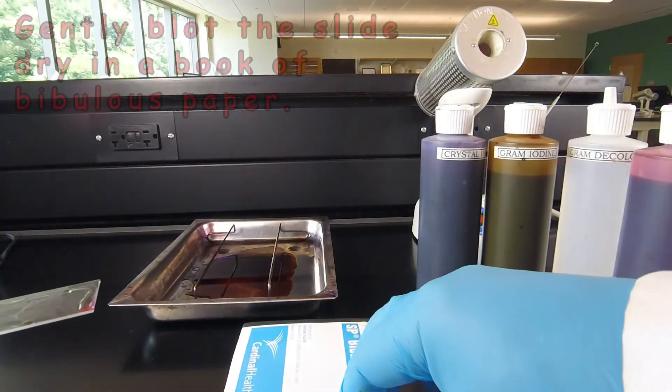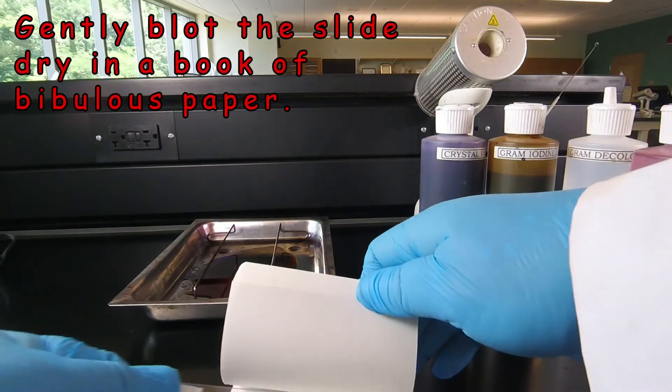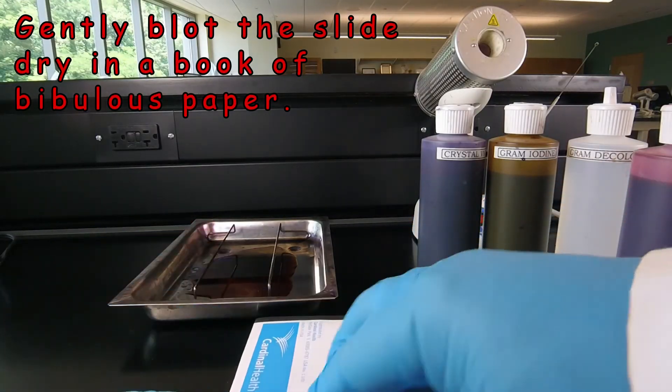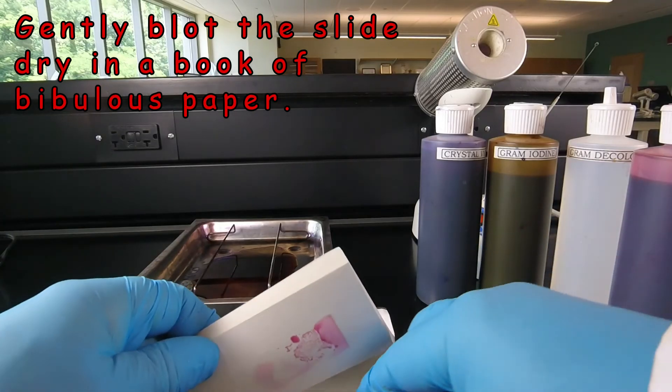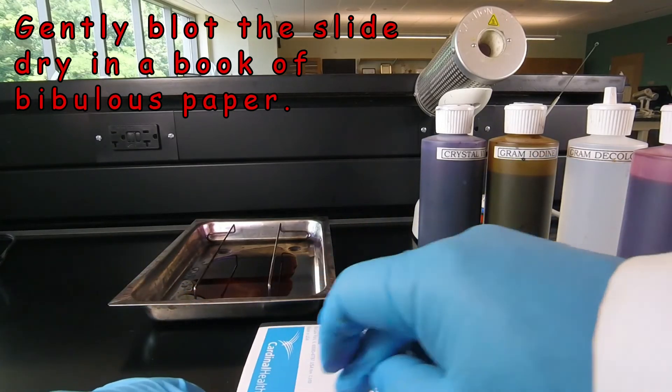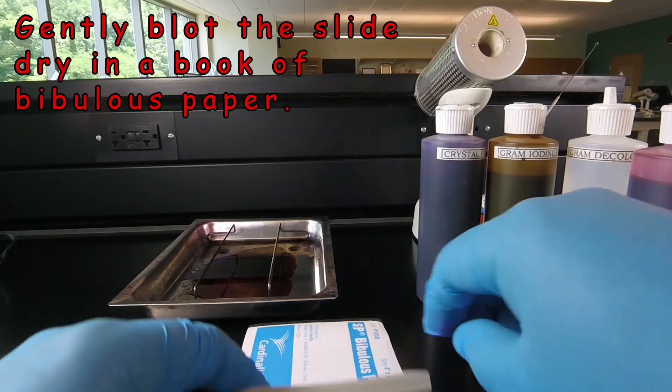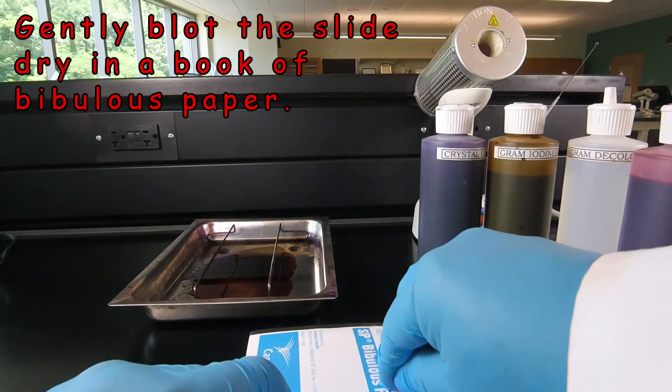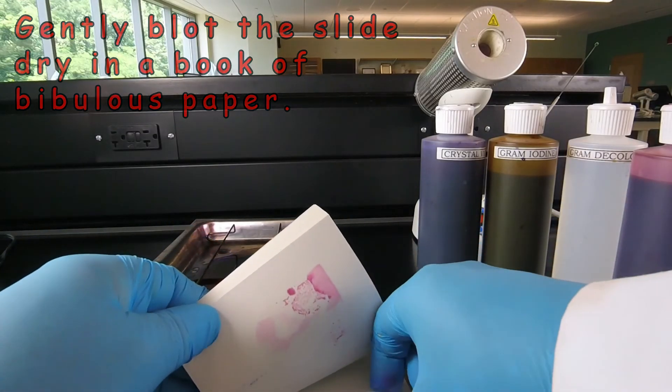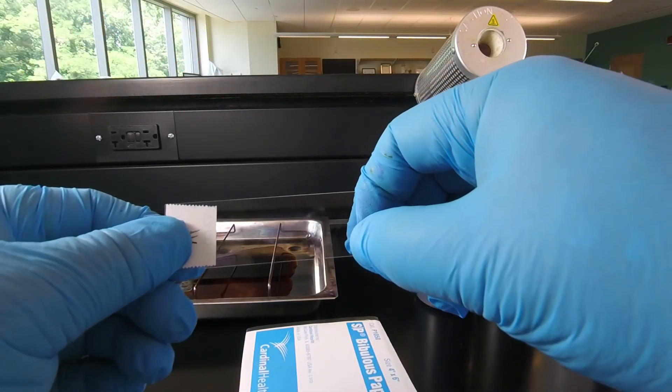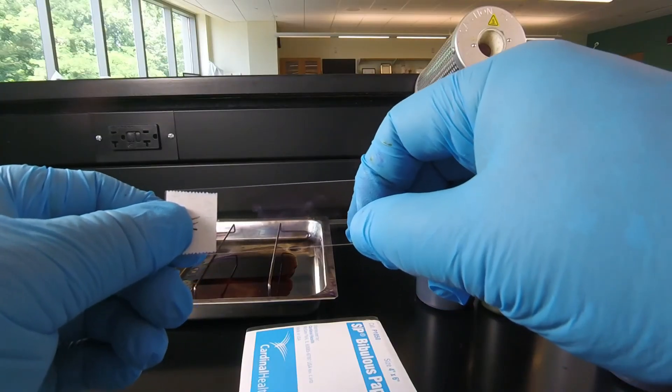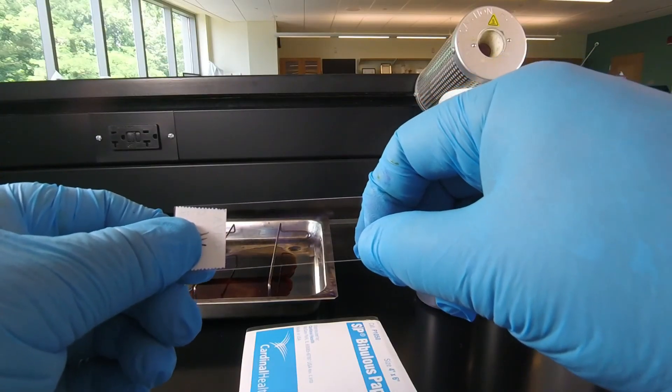We take our book of bibulous paper and put the slide in the book. We gently rub it. Don't push too hard or you could break the slide. We move the slide around several times while gently rubbing the slide. At that point, the slide is dry. We're ready to put on our immersion oil and observe under a thousand magnification.